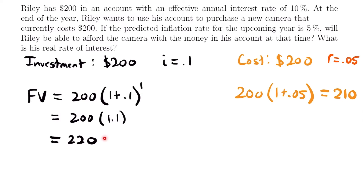Now compare that to Riley's investment, which started at $200 at the beginning of the year but is $220 at the end of the year. Comparing that $220 to the new cost of the camera, we can see that Riley will have enough money to afford the camera — he has $220 and the camera costs $210, so he can purchase it with $10 left over. Riley's purchasing power increased by $10: before, his investment equaled the cost of the camera, but one year later his investment is $10 more. So Riley can afford the camera.